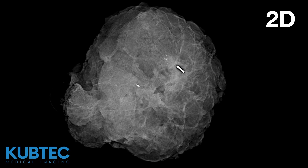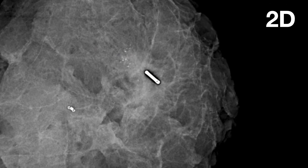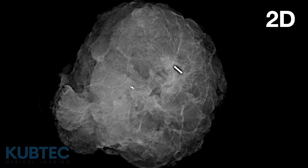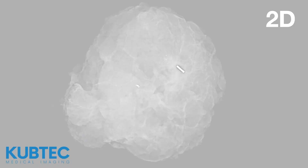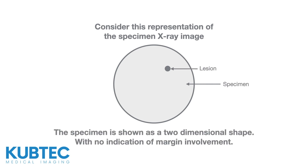Consider this traditional 2D image of an excised breast specimen. We can see microcalcification, the biopsy clip, and a marker seed, all apparently centered in the specimen where we expect them to be. The specimen is shown as a single planar two-dimensional shape with no indication of margin involvement.